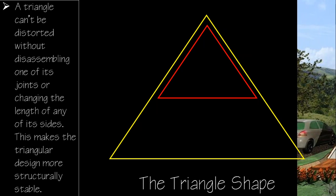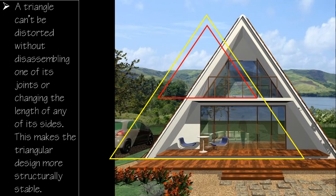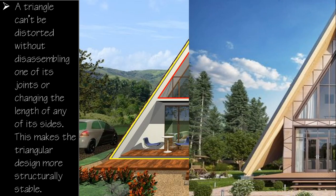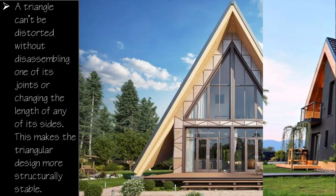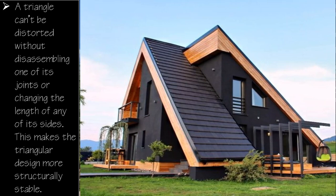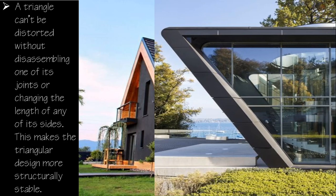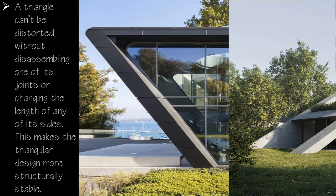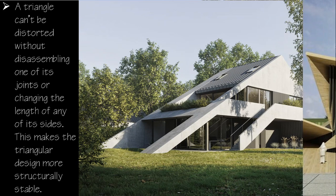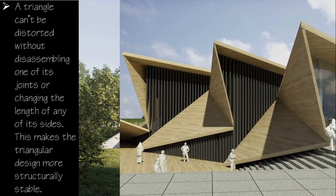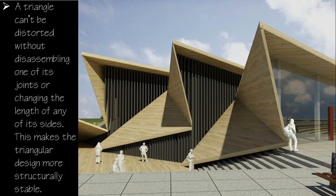Another interesting shape is the triangle. How has the triangle influenced architecture designs? A triangle cannot be distorted without actually disassembling one of its joints or changing the length of one of its sides. Without doing that, the triangle is very stable, making triangular design more structurally stable compared to the square or rectangle. Architects targeting a very stable ground structure will implement triangular elements to bring out that stability.